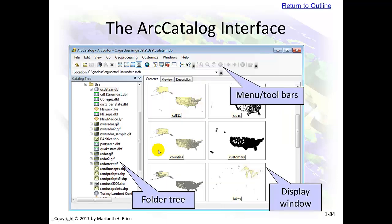Using ArcCatalog. You'll go through this in Lab 1. This is the Windows Explorer portion of ArcGIS. We have a folder and within it we have a bunch of different options. If this were Windows there would be multiple listings for many of these items, particularly the shapefiles. But in ArcCatalog they're shown as just one entry — it's a lot simpler.